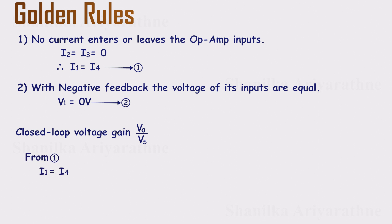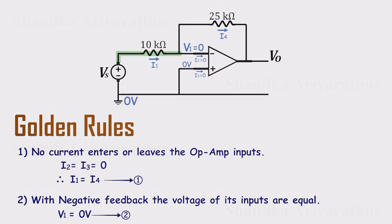Start with the first relationship: I1 equals I4. For I1, the current through the 10k input resistor, Ohm's law says it's the voltage across the resistor divided by its resistance. That's Vs minus V1 over 10k.